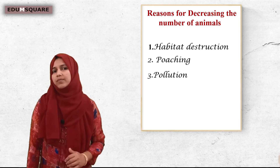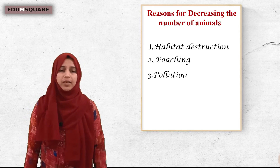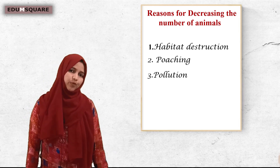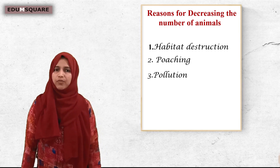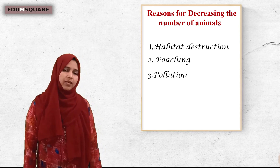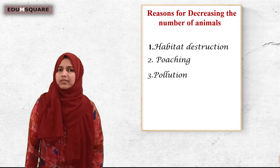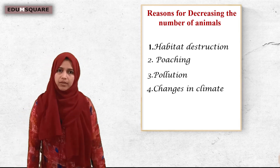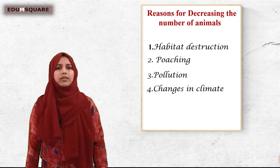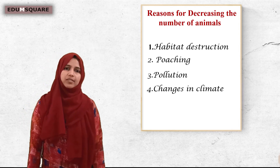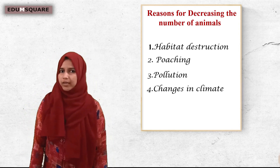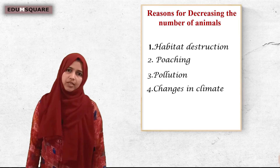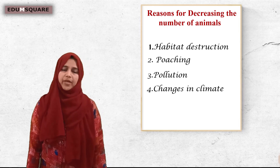These three — habitat destruction, poaching, and pollution — are the main reasons for the decreasing number of animals due to human activities. There are some other reasons too, like changes in climate and natural hazards, which also affect the number of animals.